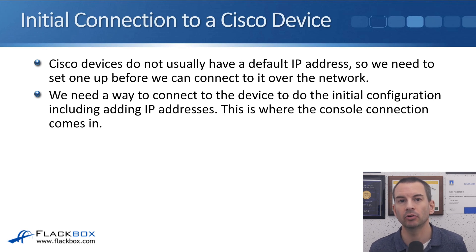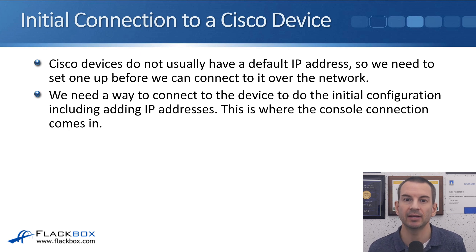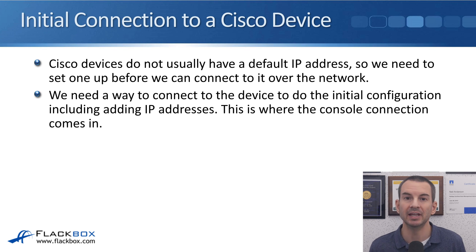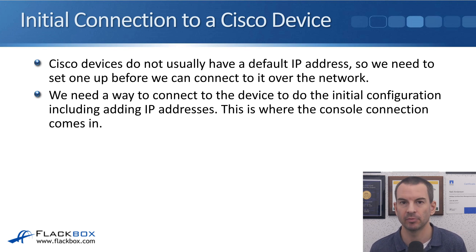Cisco devices do not usually have a default IP address, so we need to set one up before we can connect over the network. As you saw in the last lecture, I used PuTTY to connect to the management IP address of the device. But if the device does not have an IP address yet, we need a way to connect to it to do the initial configuration when we first buy it, including adding IP addresses. That is where the console connection comes in.